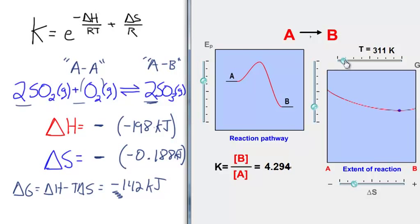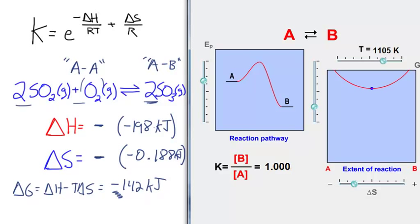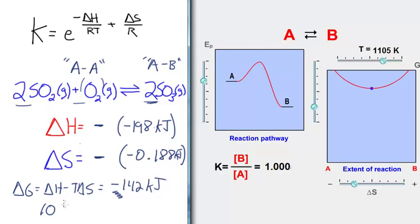So I'm going to increase T, and sure enough, I will get to some point where there's a crossover temperature. When I get to that crossover temperature, the K value will go to 1 — and at that point it's crossover. Above that, I would go to a reactant favored process. The temperature in the simulation is pretty close to what you calculate for the crossover temperature: if you set delta G equal to 0, you get a value of around 1056 Kelvin. So this is pretty close to simulating this reaction.